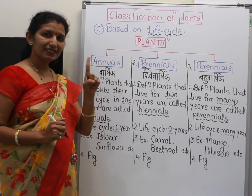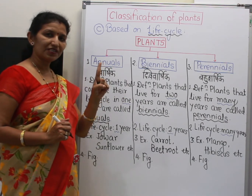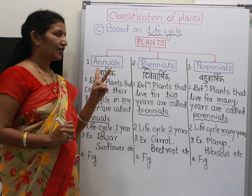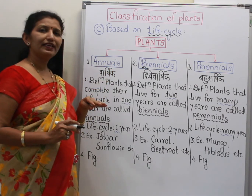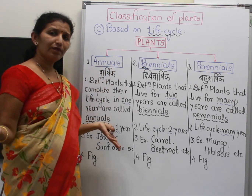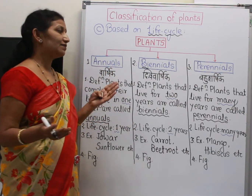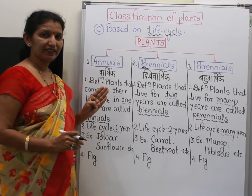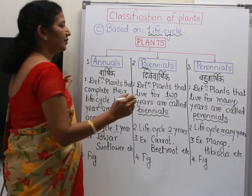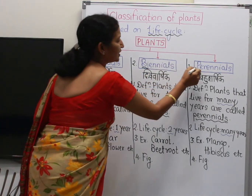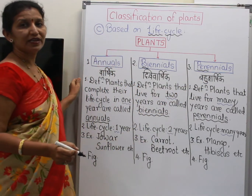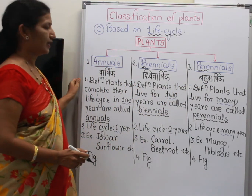Annuals are varshik, biennials are dvivarshik. And perennials — many years — that's why bahu varshik in Marathi. 'Pere' means many, that's why it is bahu varshik.